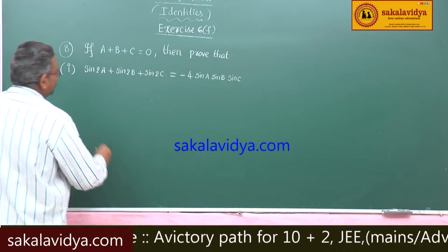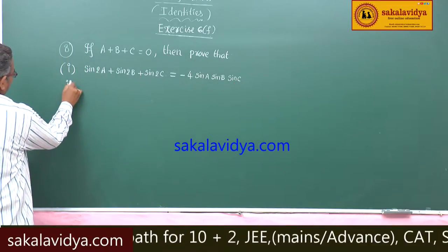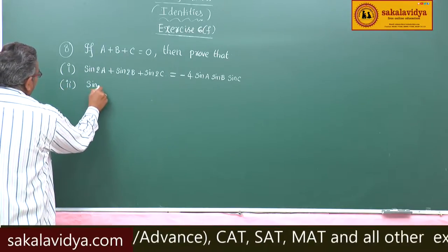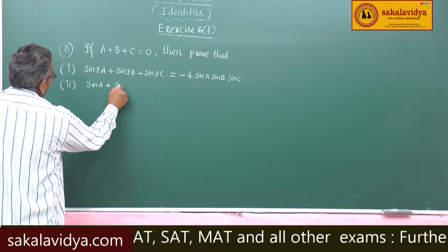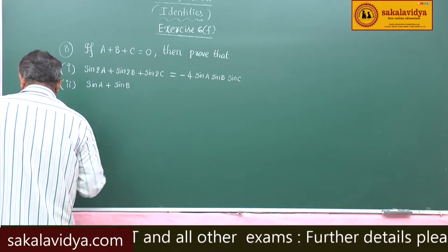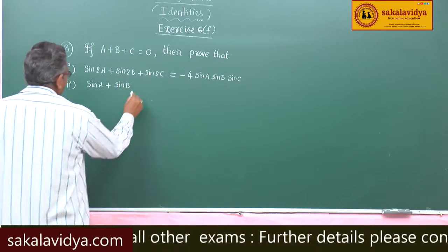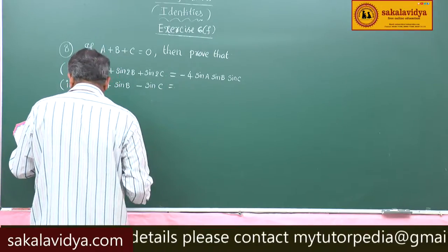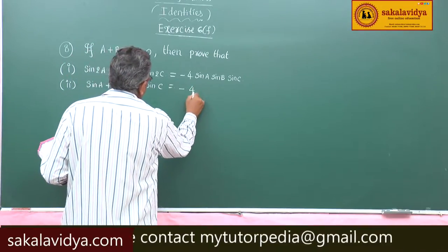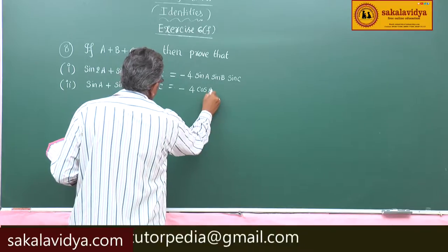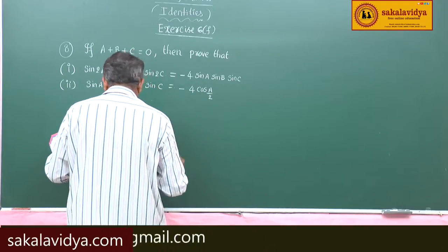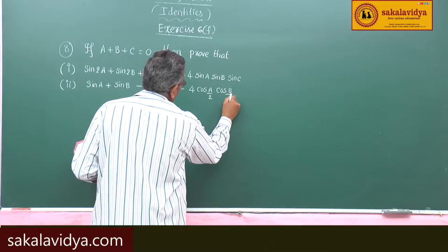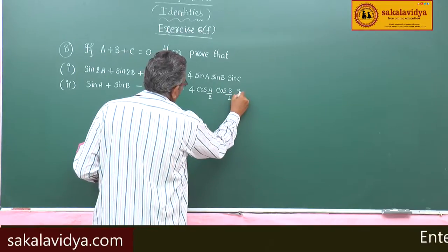Second part: sine A plus sine B minus sine C is equal to minus 4 cos(A/2) cos(B/2) sin(C/2).